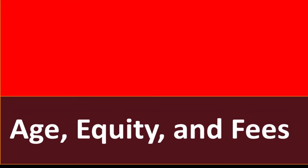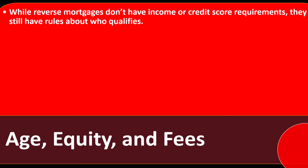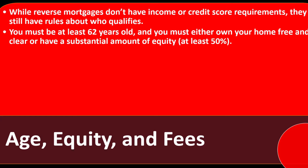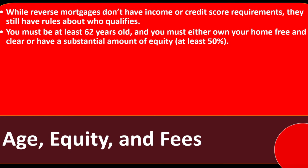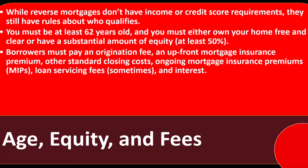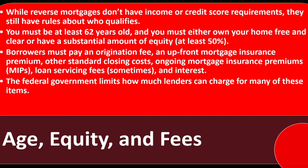Age, equity, and fees: while reverse mortgages don't have income or credit score requirements, you must be at least 62 years old and either own your home free and clear or have at least 50% equity. Borrowers must pay an origination fee, an upfront mortgage insurance premium, other standard closing costs, ongoing mortgage insurance premiums (MIPs), loan service fees sometimes, and interest. The federal government limits how much lenders can charge for many of these items.